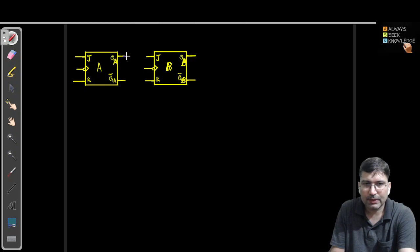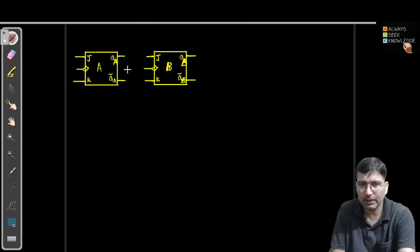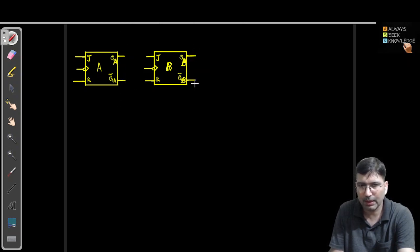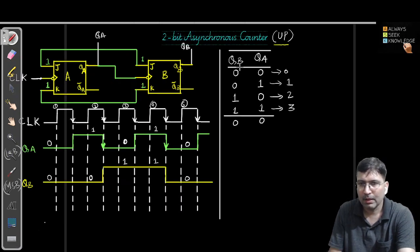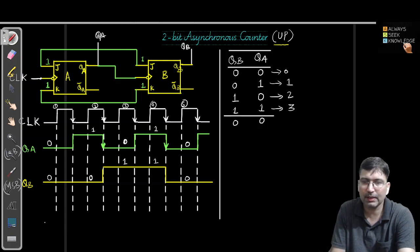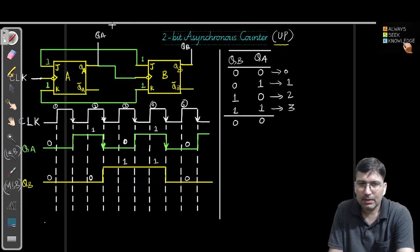The first approach is we can connect the output QA as a clock to the next flip-flop, and instead of considering QA as output and QB as output, we can start taking QA bar and QB bar as output. So if you look at the previous diagram when we are considering QB as the output pin, instead of QA and QB we start taking QB bar and QA bar as the output pin.